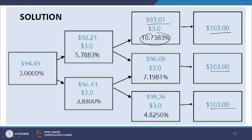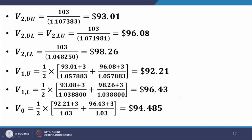If the interest rate takes the value 7.1981% at t=2 for the period from t=2 to t=3, then 103 will be discounted at 7.1981% and the value at t=2 is 96.08. And if the interest rate takes the value 4.825%, then 103 discounted at that rate gives a value of 98.26. So we have 93.01 corresponding to 10.7383%, 96.08 corresponding to 7.1981%, and 98.26 corresponding to 4.825%.